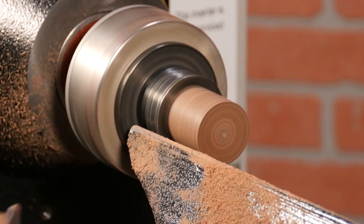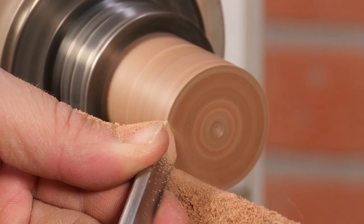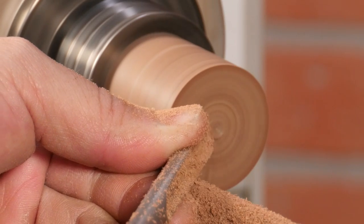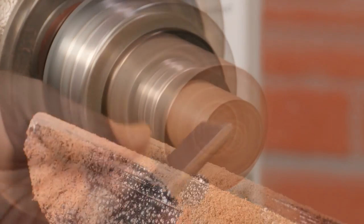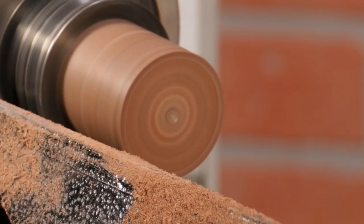With the blank secured in the chuck, square off the face of the blank using a spindle gouge. I also use the tip of a skew to create a small dimple to help the drill bit start on center.